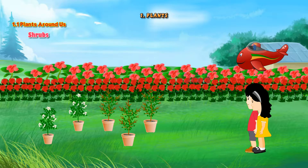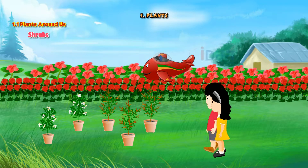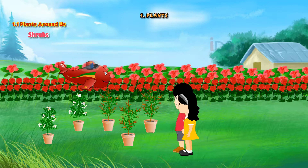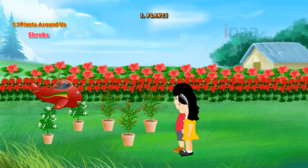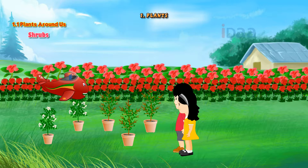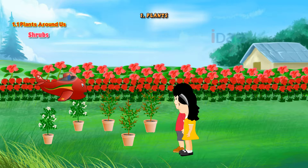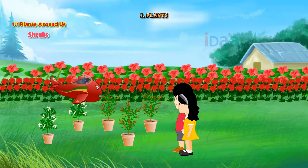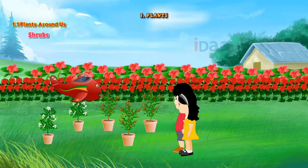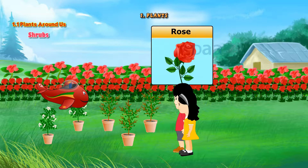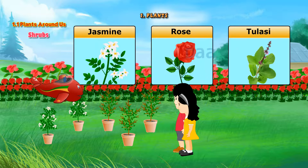Hey look, there is a garden with a lot of small plants. Let's go there. These plants are called shrubs. Now let us learn about shrubs. Here you can see some small plants. These are shrubs. They are small and bushy and they are not as strong as trees. Examples of shrubs are rose, jasmine and tulsi.